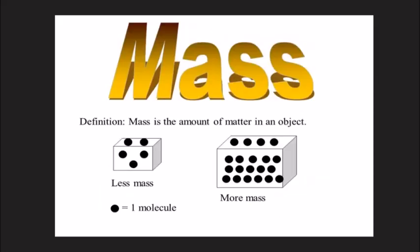Let's talk about different quantities. First is mass. The amount of matter present in a substance is called its mass. Looking at a diagram, in the first picture there are only 5 molecules, so that substance has less mass. In the second picture there are many more molecules, so it has more mass. The greater the amount of matter present, the greater the mass of that substance.